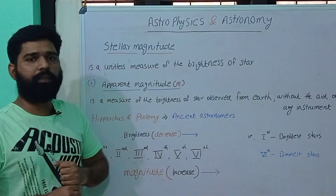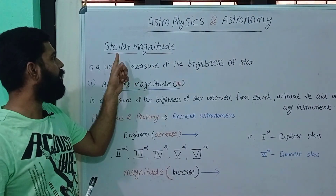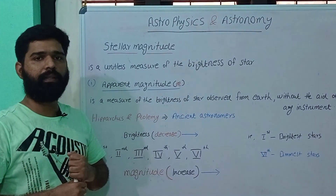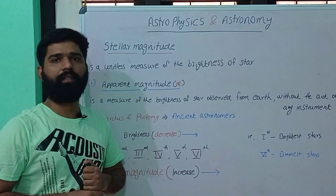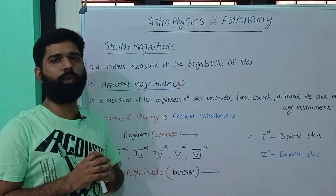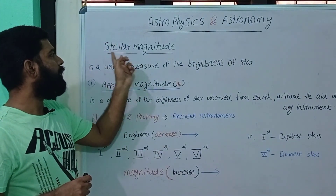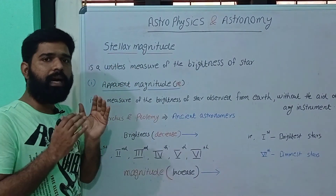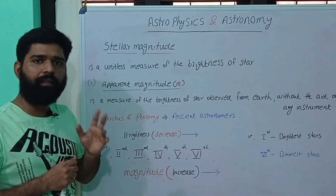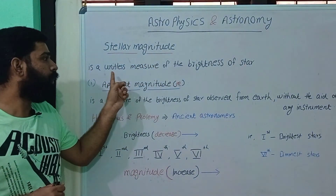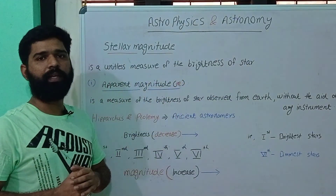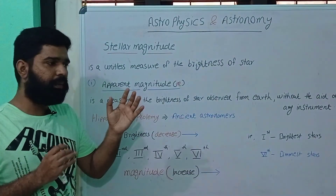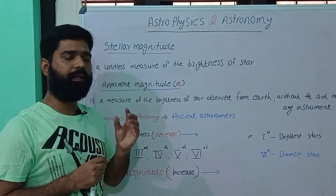The first point is Stellar Magnitude. What is Stellar? It is related to a star. Interstellar means between stars. Stellar Magnitude is a unitless measure of the brightness of a star. The brightness of the star is what we are measuring.